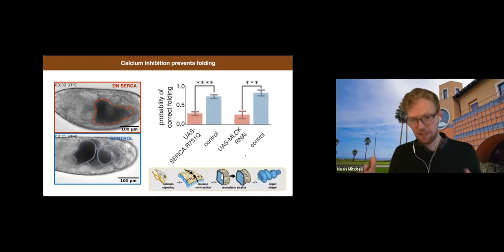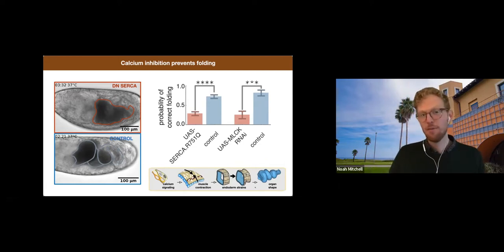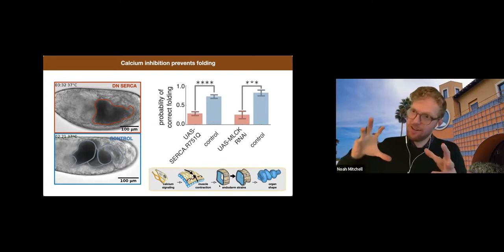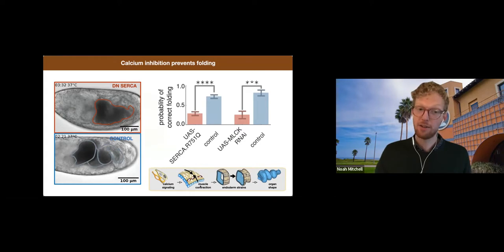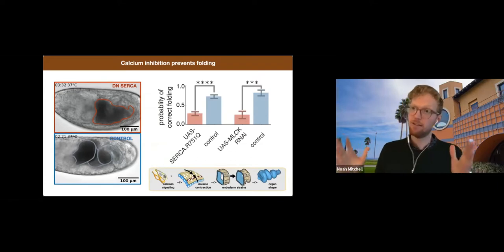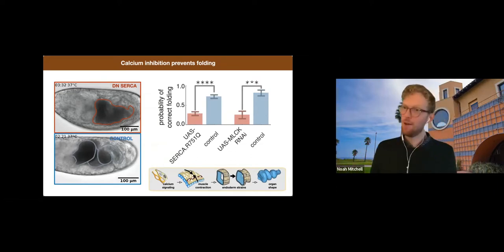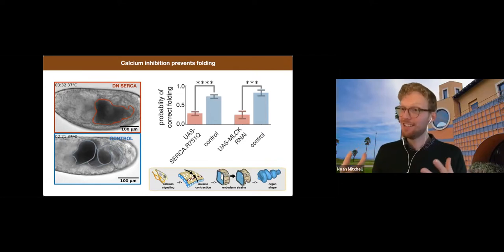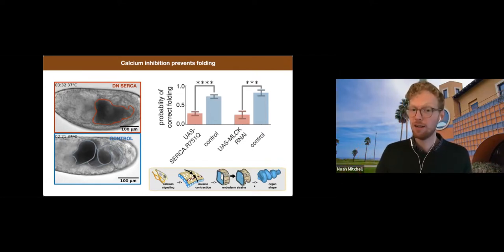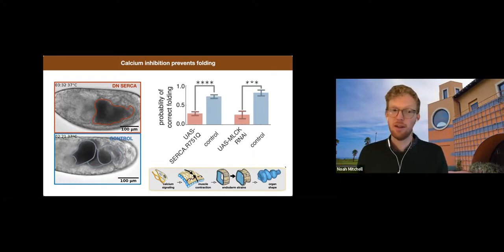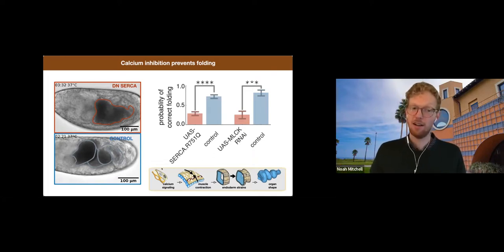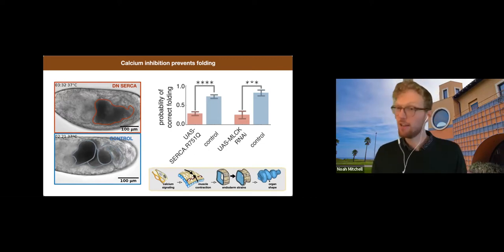So this suggests that this calcium is patterning these muscle contractions. So we have this picture now in mind, this thread from the organ shape. We saw that those were related to conversion extension in the endoderm. That conversion extension on the endoderm is triggered by muscle contractions. And this in turn is regulated by this pattern of calcium pulses. At the same time, we know that these Hox genes that we saw before are ultimate regulators of organ shape. So could it be then that the Hox genes are controlling the emergence of this pattern of calcium pulses to generate this multi-scale mechanical program?